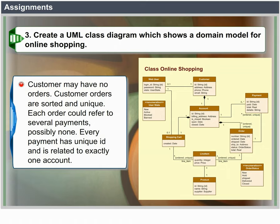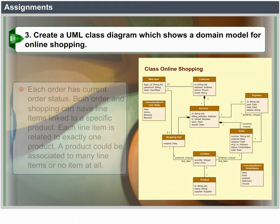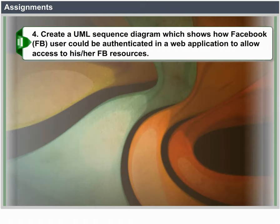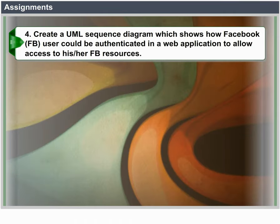Each order could refer to several payments, possibly none. Every payment has a unique ID and is related to exactly one account. Each order has a current order status. Both order and shopping cart line items link to a specific product. Each line item is related to exactly one product.